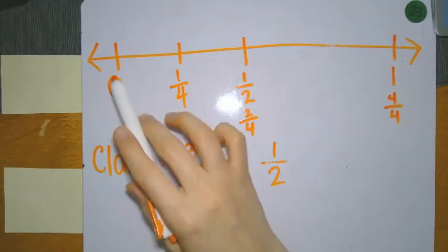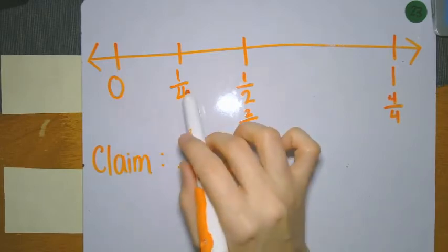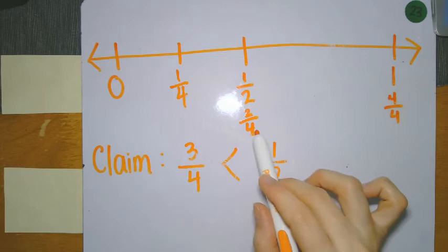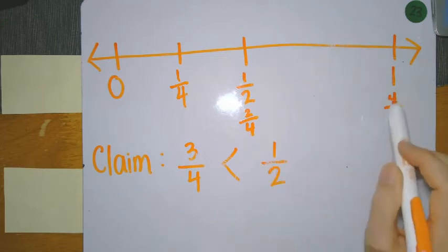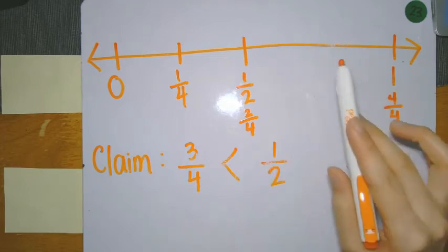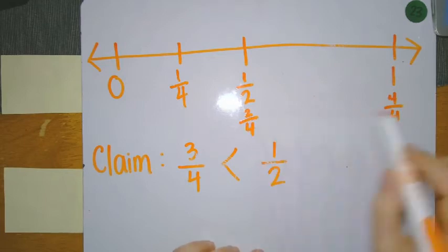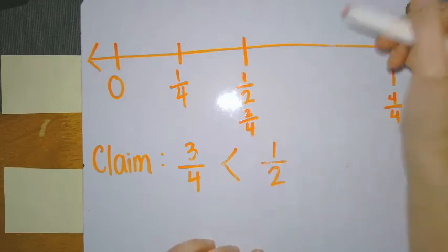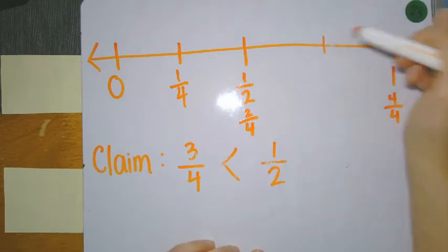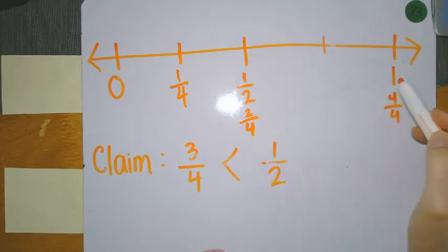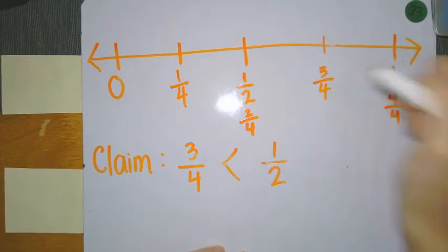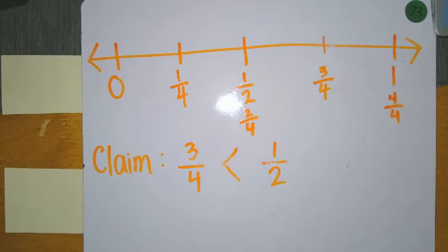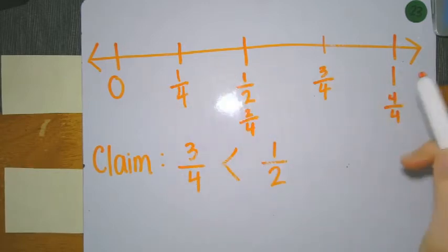So we have zero, one out of four, two out of four, and four out of four. I should be able to recognize I'm missing the fraction in between two and four. Halfway between my two fourths and my four fourths is my three fourths. Once I have them all on my number line, I need to plot them.